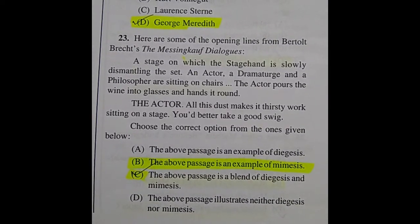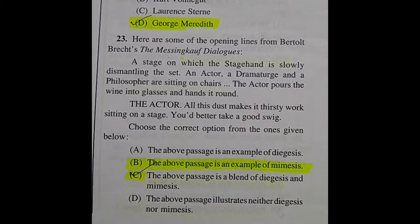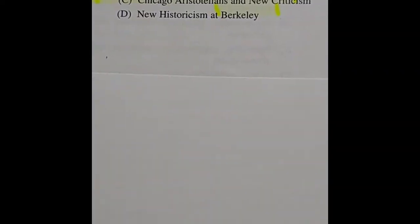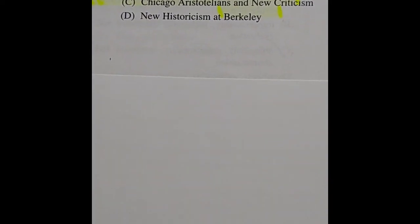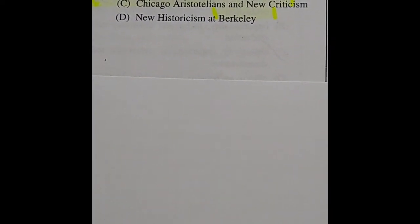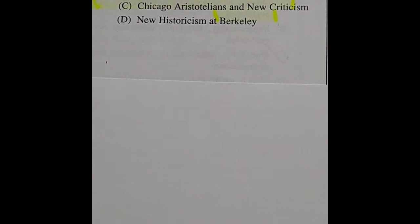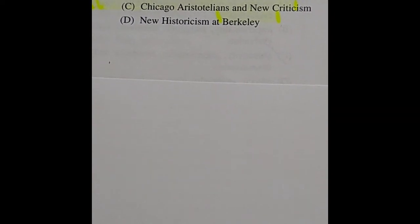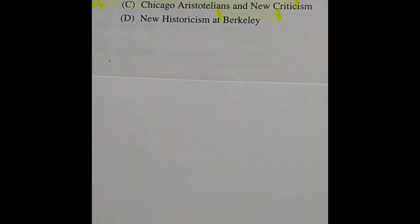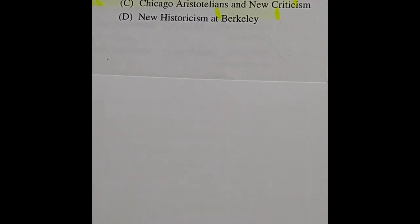Question 24: The Fugitives and the Agrarians are linked to — the answer is left as an exercise for the viewer; please put your answer in the comments.